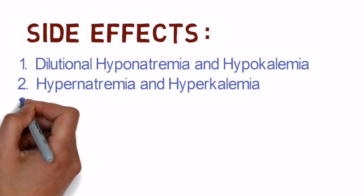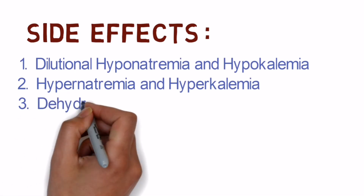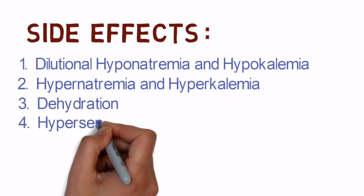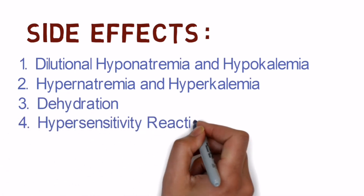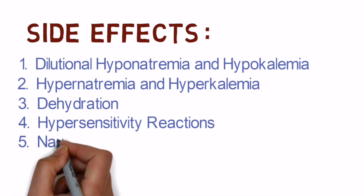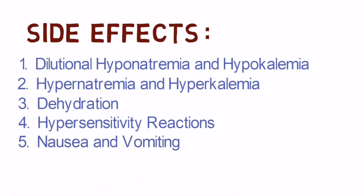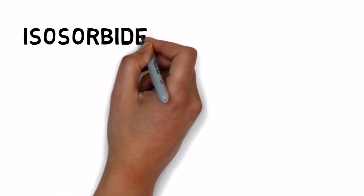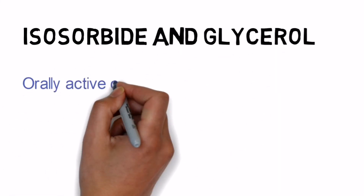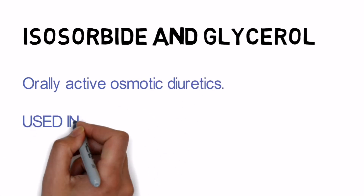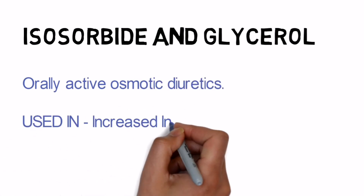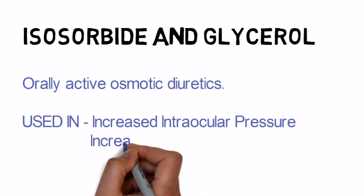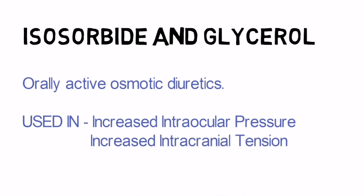Additional side effects: third, dehydration, because mannitol causes diuresis. Fourth, hypersensitivity reactions. Fifth, nausea and vomiting. Isosorbide and glycerol are orally active osmotic diuretics and they are used in increased intraocular pressure.